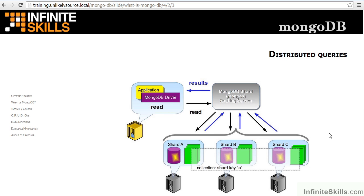If, on the other hand, a shard key does not accompany the read request, results can still be obtained; however, they are scattered. In this case, each server with a shard that participates in the collection must individually respond to the read request. Thus, we end up with three read requests and three sets of results being sent back through the routing service and ultimately back to the application.